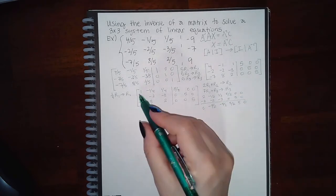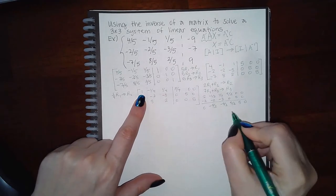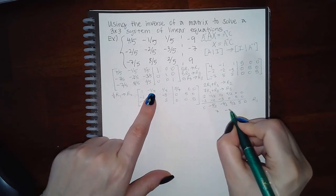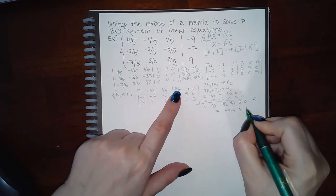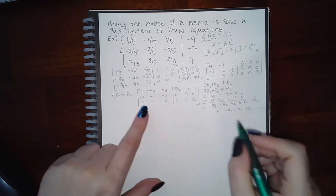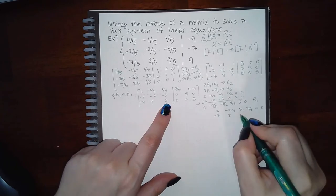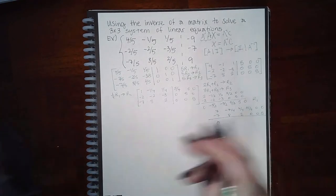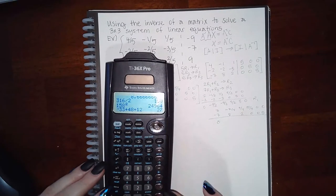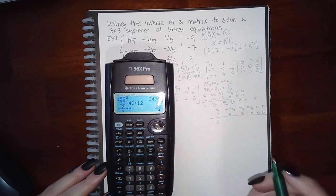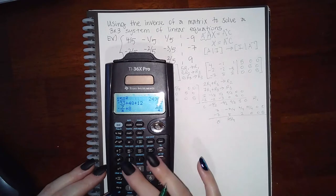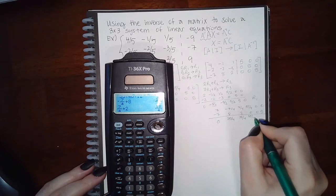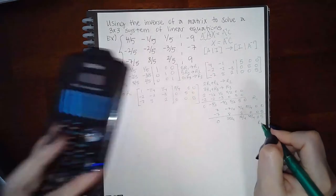For the bottom row, seven times row one gives: 7, -7/4, 7/4 | 35/4, 0, 0. Adding row three underneath gives: 0, 25/4, 15/4 | 35/4, 0, 5. That is the new row three.